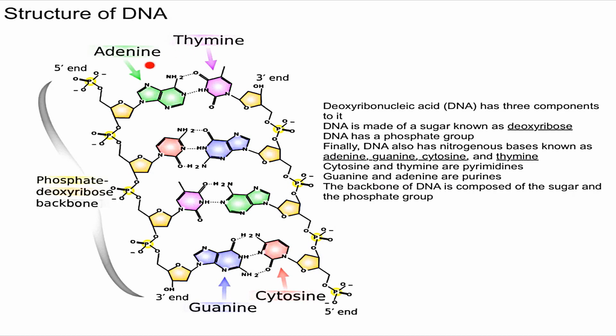Over here you can see a picture of DNA, and I'm just going to point out where the deoxyribose is. The deoxyribose is this little orange pentagon-looking thing. Compared to ribose, it's deoxy because it's missing an OH group off of this carbon right there.